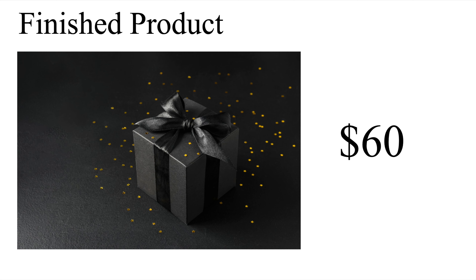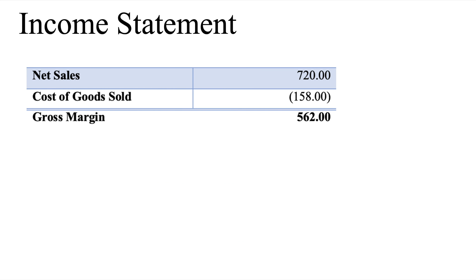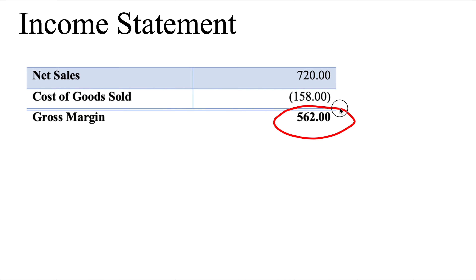Let's say we get super lucky and all 12 of our bottles of muscle ache massage oil sell on the first day of launching them on our website. In our financial statement — more specifically the business's income statement — our net sales of 12 bottles at $60 each will be $720. Underneath net sales will be cost of goods sold of $158. We subtract this value from our net sales, leaving us with a gross margin of $562 before taxes and operating expenses.